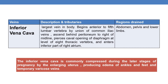Inferior vena cava is the largest vein of the body. It begins anterior to the fifth lumbar vertebra by the union of the common iliac veins, ascends behind the peritoneum to the right of the midline, pierces the caval opening of the diaphragm at the level of the eighth thoracic vertebra, and enters the inferior part of the right atrium. The regions drained are the abdomen, pelvis, and lower limbs.